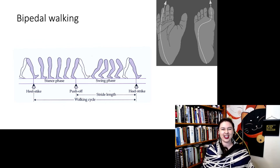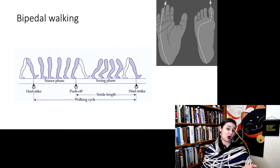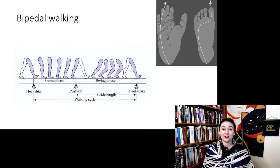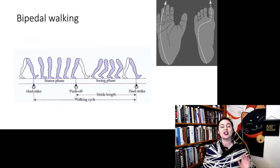We can also look at the difference of phases of bipedal walking. So that first phase is, of course, the heel strike. We have a stance phase as we are rolling through our foot. And then we have a swing phase as that leg is up in the air until the next heel strike.